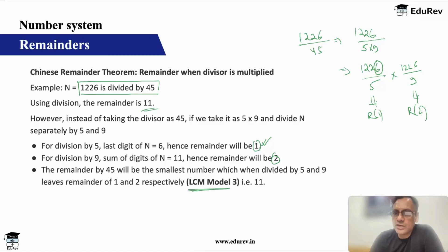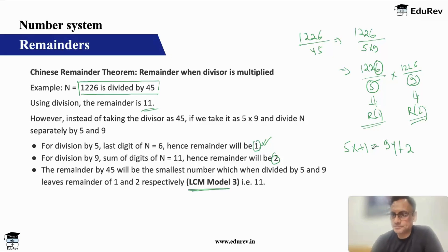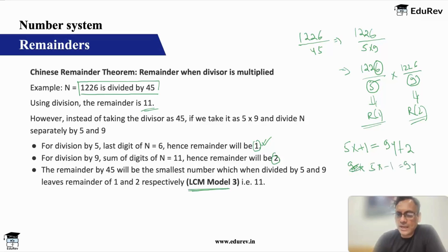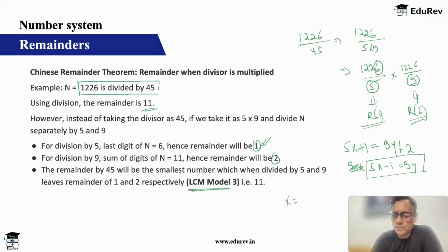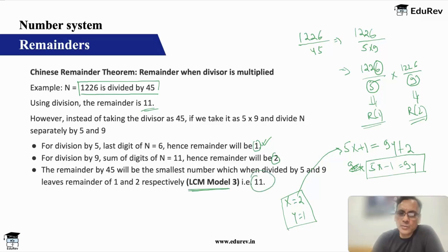After this, we use LCM model 3 concept. Your dividend will be of the type 5x plus 1 from the first equation, and 9y plus 2 from the second. I equate them because the dividend is obviously the same: 5x plus 1 equals 9y plus 2, or 5x minus 1 equals 9y. You check for the smallest possible values of x and y which satisfy this. You can see that if x is equal to 2 and y is equal to 1, this gets satisfied. Putting x equal to 2 gives 11, and putting y equal to 1 also gives 11. So my remainder is going to be 11 — the same answer.